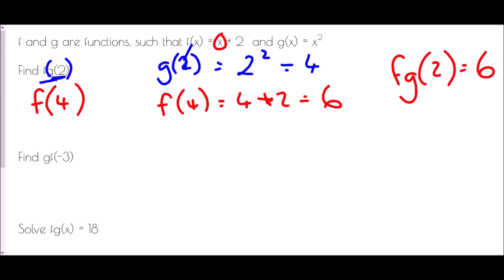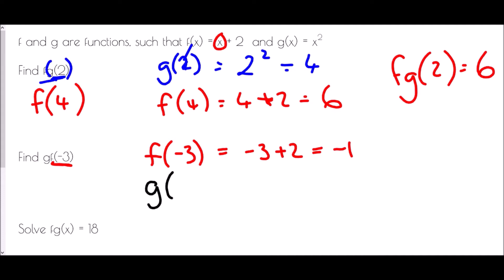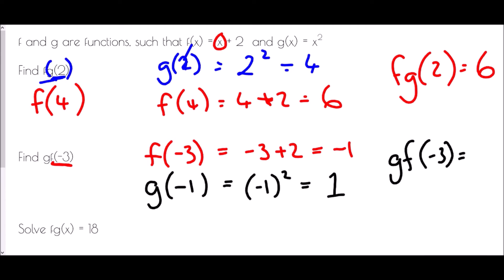If I've got gf of negative 3, that means f is the first function applied. So we need to do f of negative 3 first: negative 3 plus 2 equals negative 1. That is then going to go into function g. So g of negative 1 equals negative 1 squared, which is 1. Therefore gf of negative 3 equals 1.